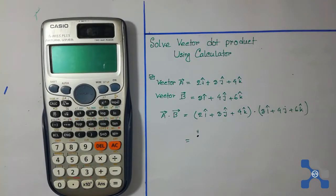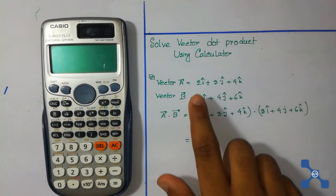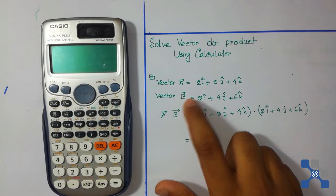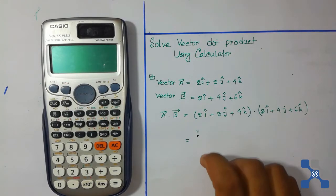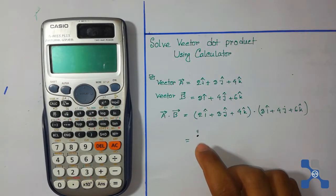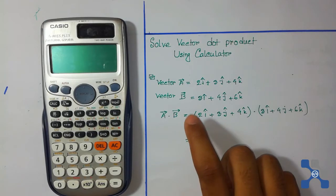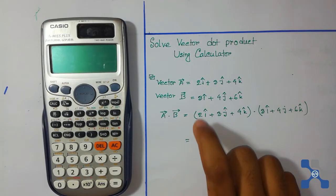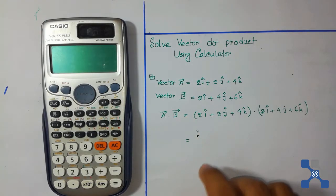In this video I am going to show you how to solve vector dot product using a calculator. This is vector A and this is vector B, and we will perform a dot operation between vector A and vector B.